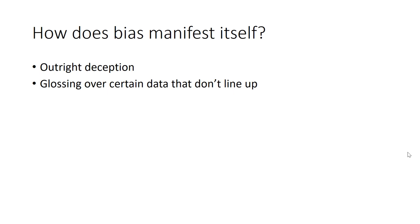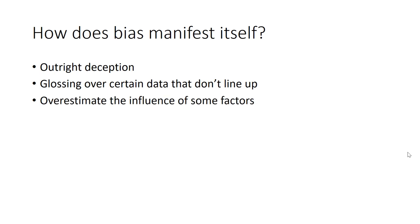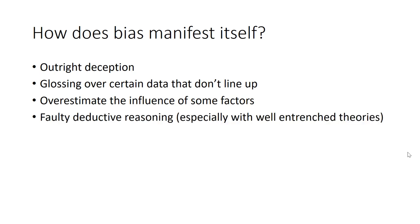Far more common is glossing over data that don't line up. If you run an experiment five times and four give the same result but one doesn't, you might assume the one that differed was a mistake. That's a more common area of bias. Also fairly common is overestimating the influence of some factors — as we saw with salamanders and swimming behavior. Another way bias enters is faulty deductive reasoning, where entrenched but false theories lead to incorrect predictions.